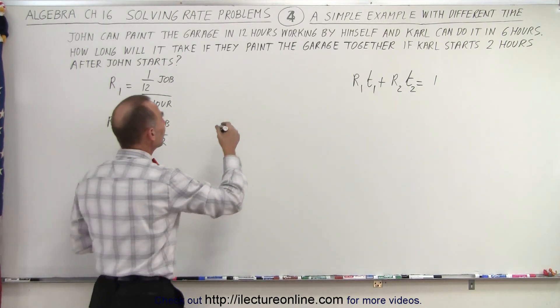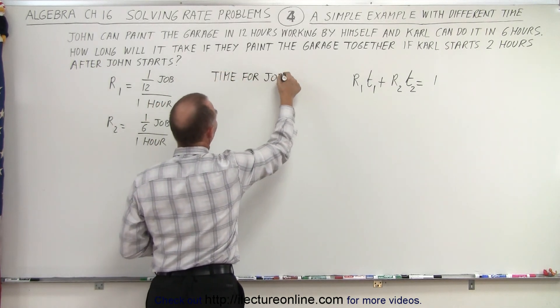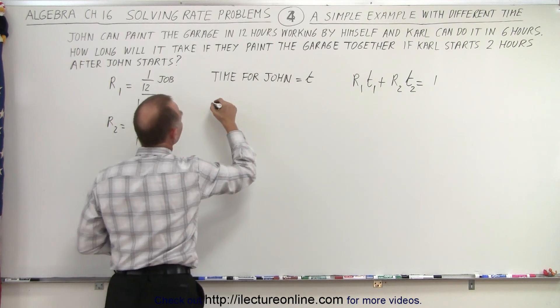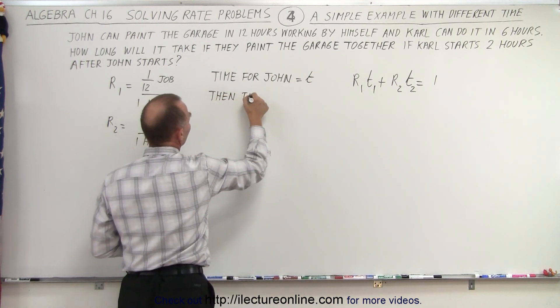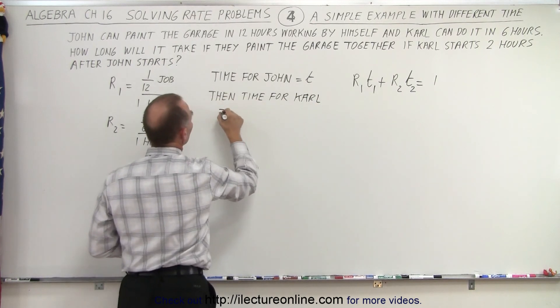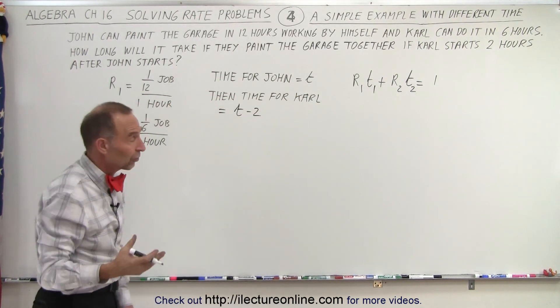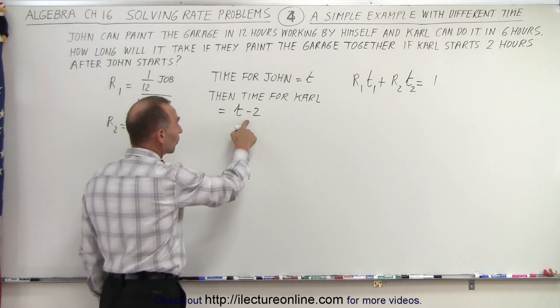So if the time for John is equal to t, then time for Carl will be equal to t minus 2, because since Carl starts two hours later, Carl will work two hours less.